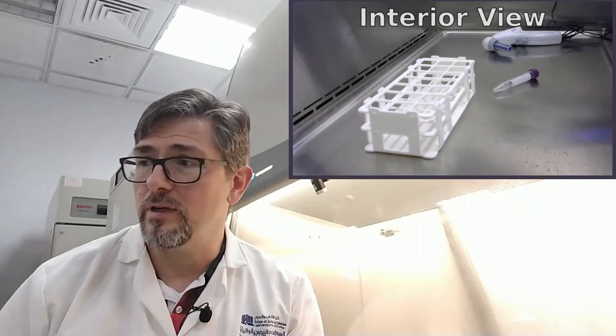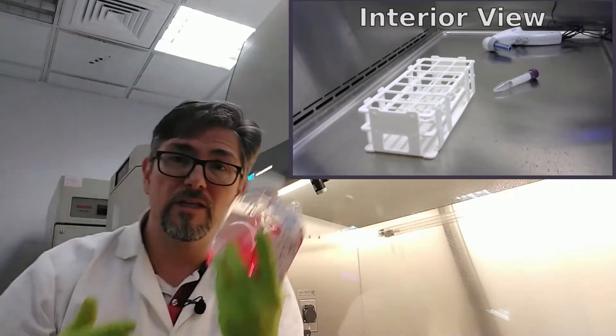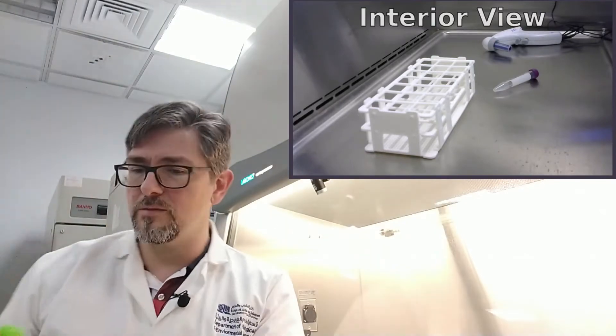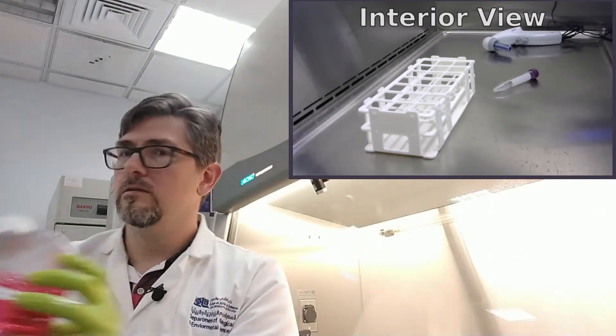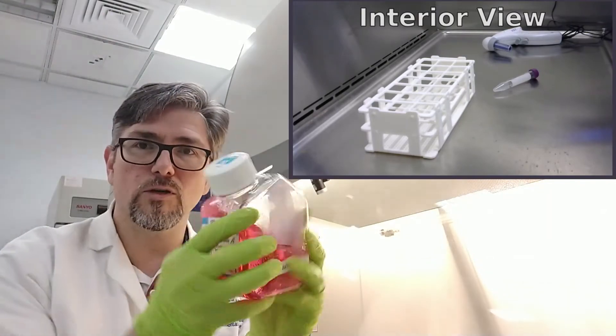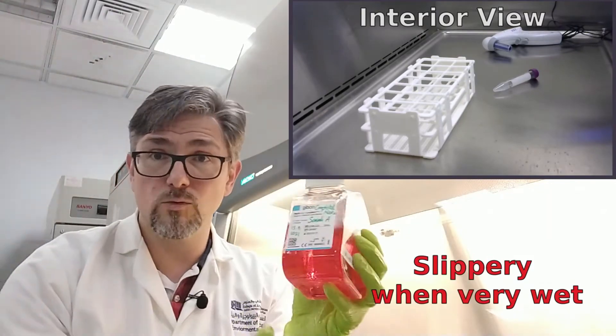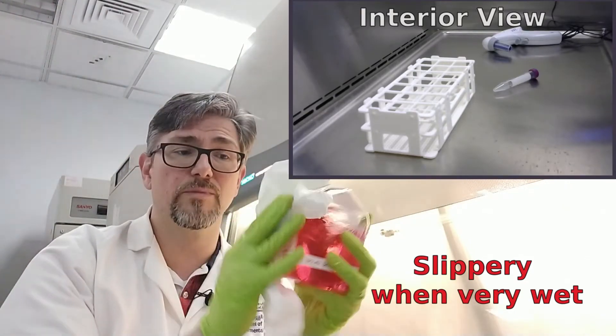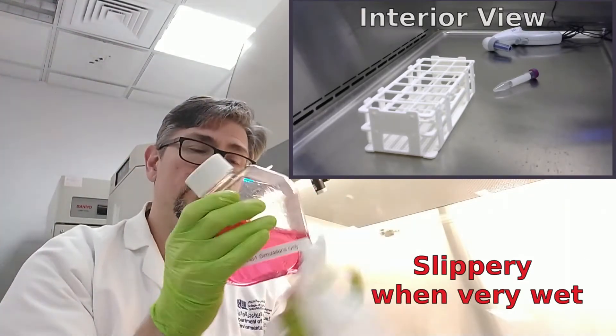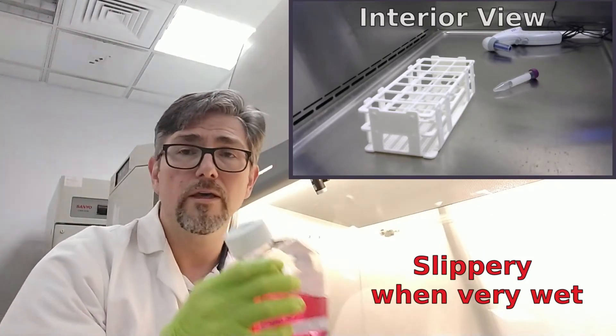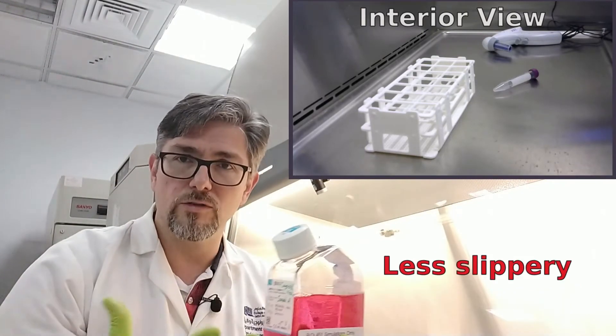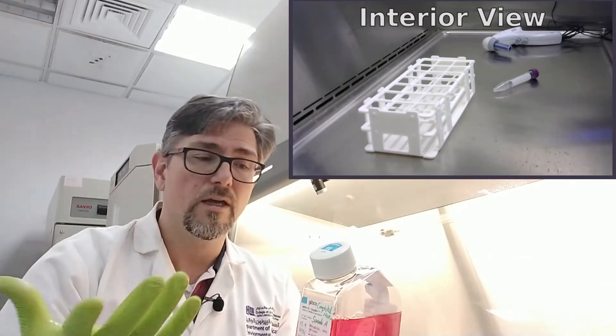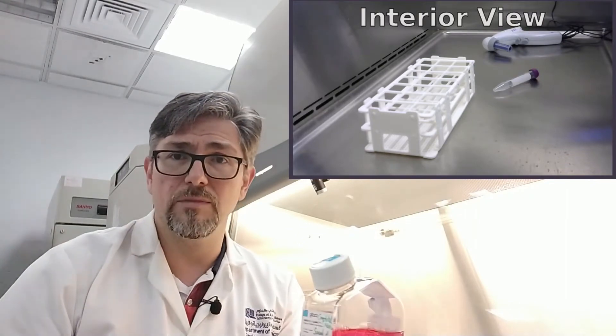Now, for other components, like media bottles, for example, these are fairly large, and once you spray them down and they are completely soaked, they can be quite slippery. And this is where I would take a paper towel and wipe it down. So, start at the top, near the opening especially, and then wipe down the sides. You're not trying to remove all the ethanol. You're simply trying to make it a little easier to handle. So, you're spreading the ethanol evenly over the surface, and then we're going to allow it to just evaporate once inside the BSC.